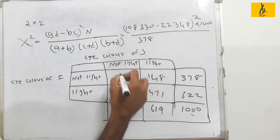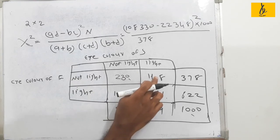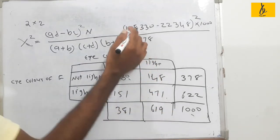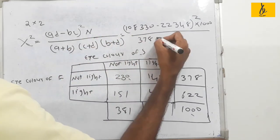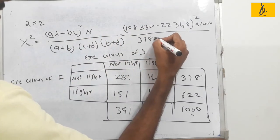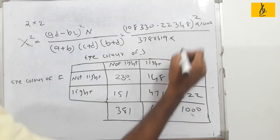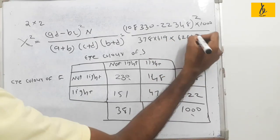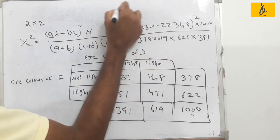We compute A plus B, into A plus B, into C plus D, and C plus D, using the formula to arrive at the final answer.